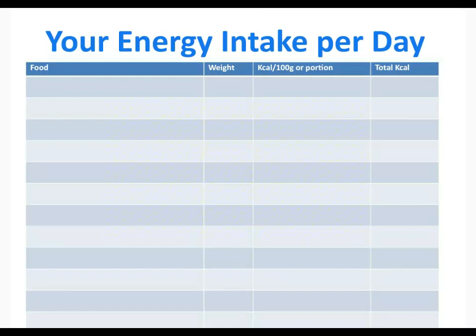You can work out your energy intake per day. The most accurate way is to weigh all your food and look up the kilocalories per 100 grams, or estimate kilocalories per portion. It's tricky, but give it a go — get your energy input per day, compare it to your energy output, and try to estimate whether you're in positive, negative, or neutral energy balance. It'll be interesting to see where you are.